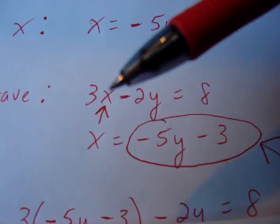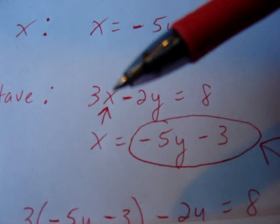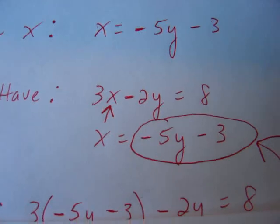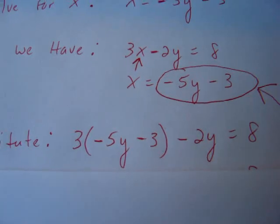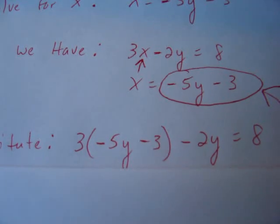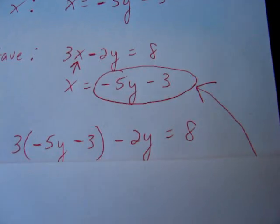In other words, instead of 3 times x, we're going to substitute in x. Instead of 3 times x, we're going to do 3 times negative 5y minus 3. Here we go. We have 3 times what x just became, 3 times negative 5y minus 3 minus the 2y from the original problem equals 8.